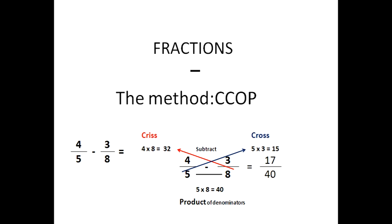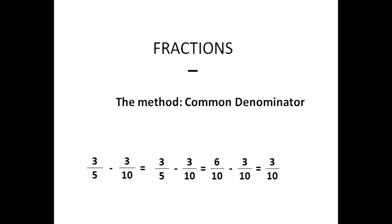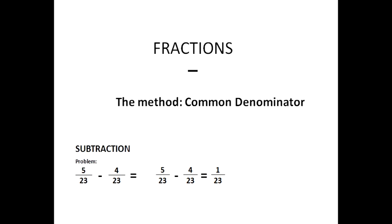For the denominator, five times eight is forty, so the final answer is seventeen over forty. For three-fifths minus three-tenths, the denominator situation is like the addition problem — five times two is ten — so we change three-fifths into the equivalent fraction six-tenths. Now we have six-tenths minus three-tenths: six out of ten minus three out of ten leaves three out of ten.